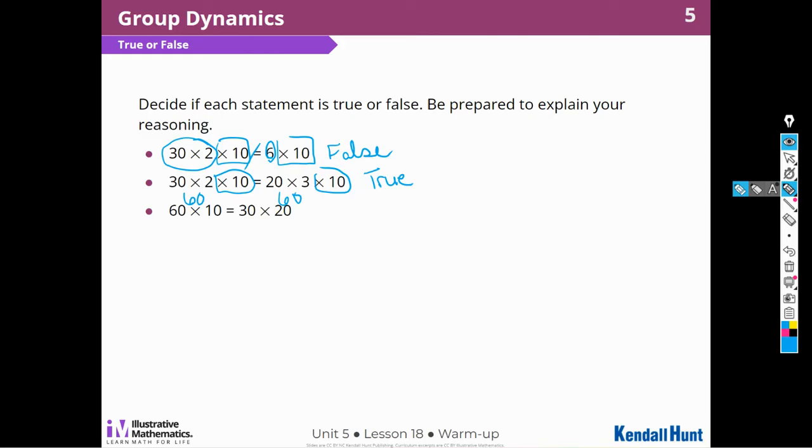Then we have 60 times 10 is the same as 30 times 20. Well, 60 times 10, I can multiply 6 times 1, which is 6, and then add the tens from here and the tens from here, which would be 600. Over here I can do the same thing. 3 times 2 is 6, and then I have 10 here, 60, and a 10 here, 600. So this statement is true.